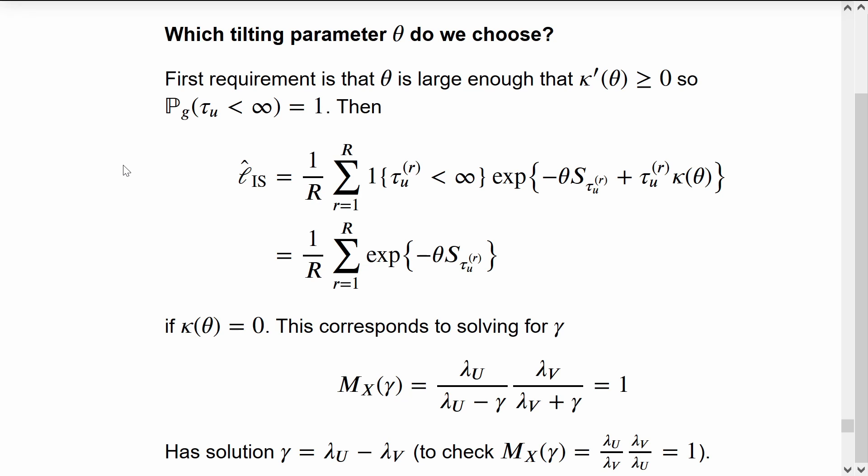In that case, the importance sampling estimator simplifies because this indicator can disappear.